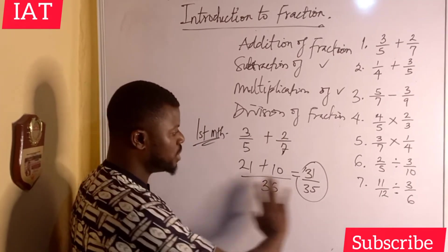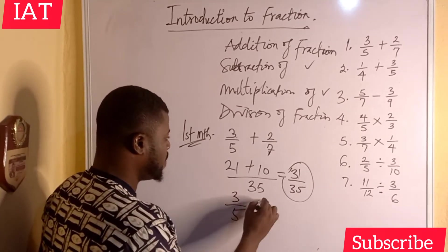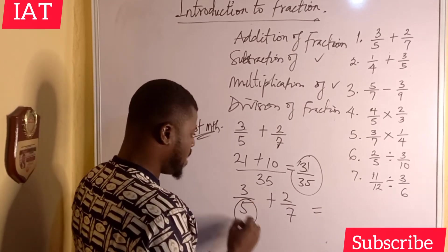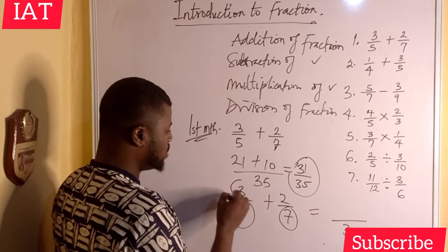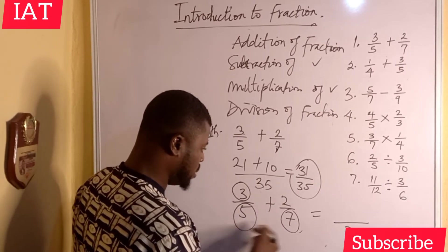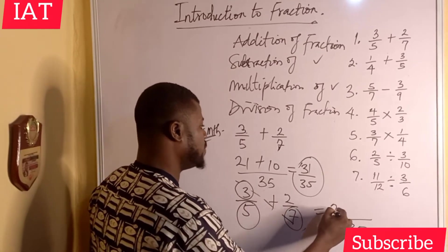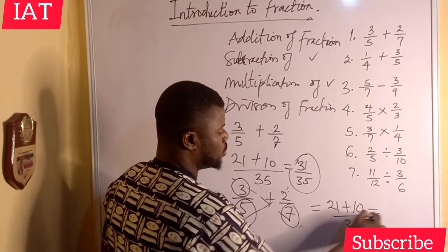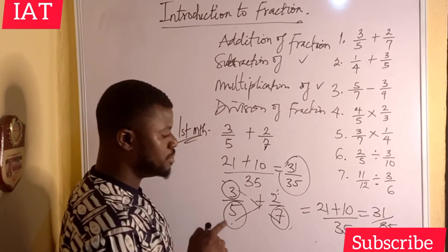For the quick method: if I have three over five plus two over seven, first multiply the denominators — five times seven gives 35. Then use the diagonals: three times seven gives 21, and two times five gives 10. So 21 plus 10 gives 31, and the answer is 31 over 35. This diagonal method is much faster.